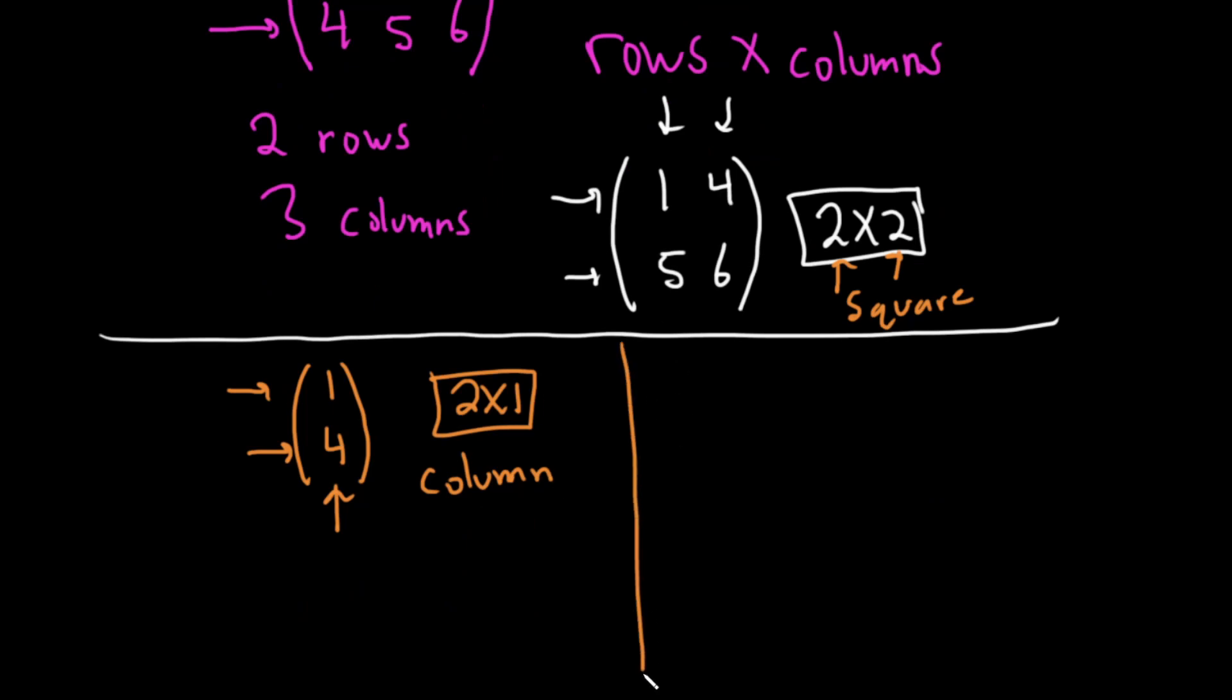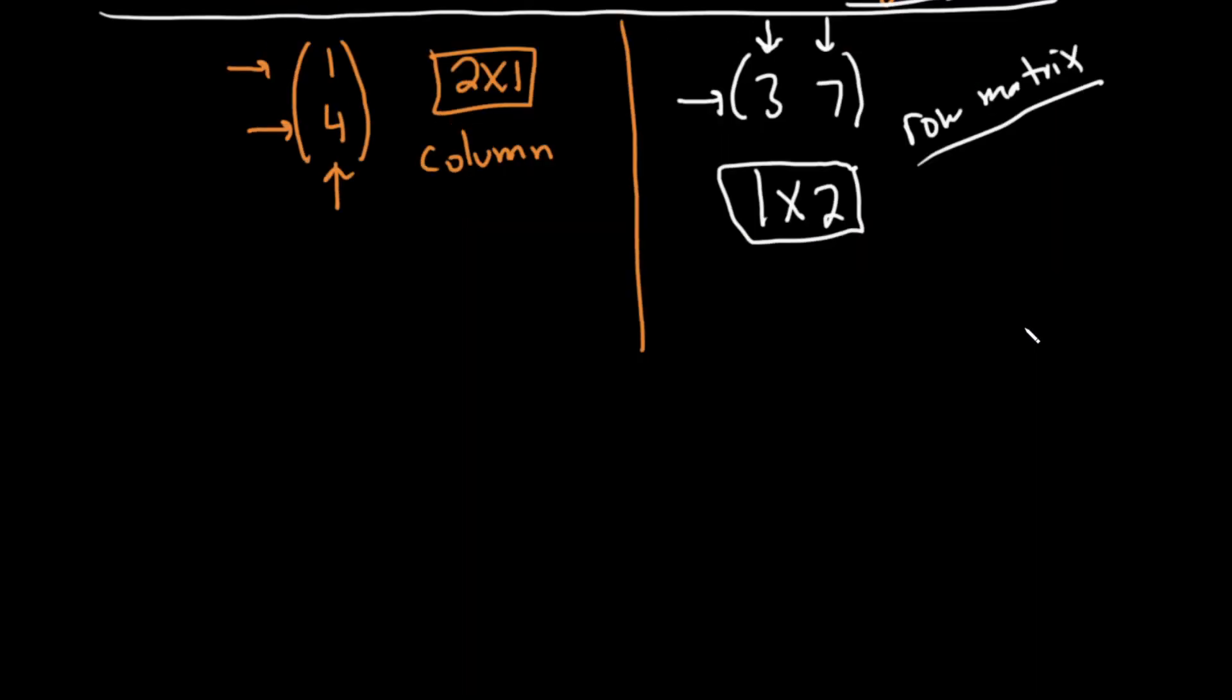Let's do another example. How about this one? 3, 7. This is called a row matrix because it has exactly one row. So it's a 1 by, and then there's one column here and another column here. So this is a 1 by 2 matrix. This is called a row matrix. All kinds of interesting names. We have square, whenever the rows are equal to the columns. Whenever you have a single column, you call it a column matrix. Whenever you have a single row, you call it a row matrix.